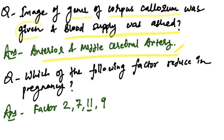Which of the following factors reduce in pregnancy: Factor 2, 7, 11, and 9? Factor 11 decreases in pregnancy.